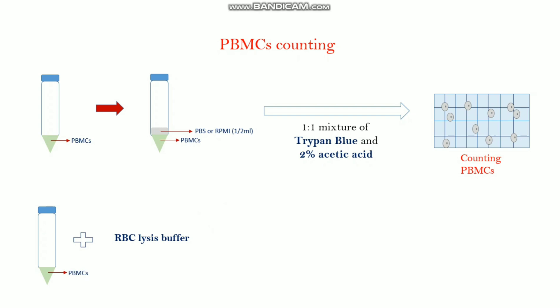Alternatively, you can also use RBC lysis buffer, which lyses the RBCs. RBCs actually contain no nucleus, so they cannot divide. After one or two passages the RBCs can lyse by themselves and do not influence the experiment.